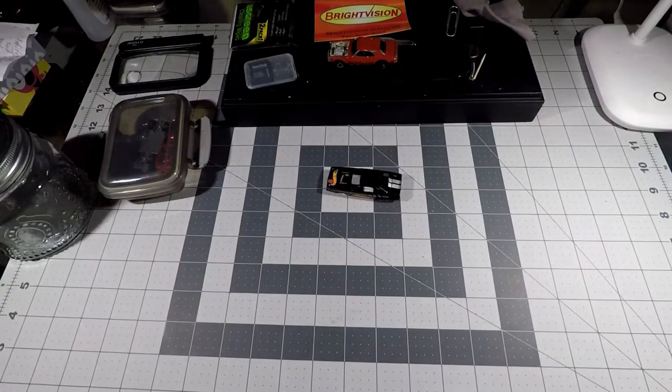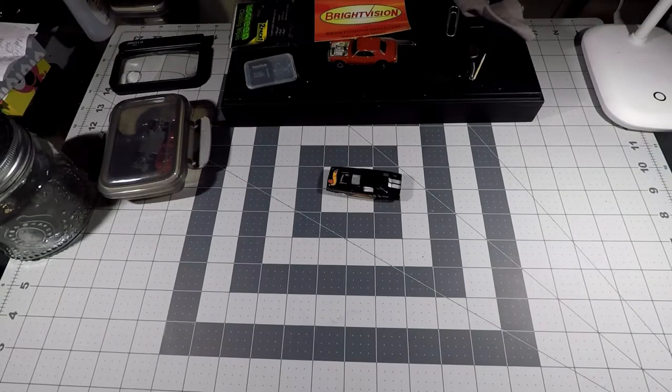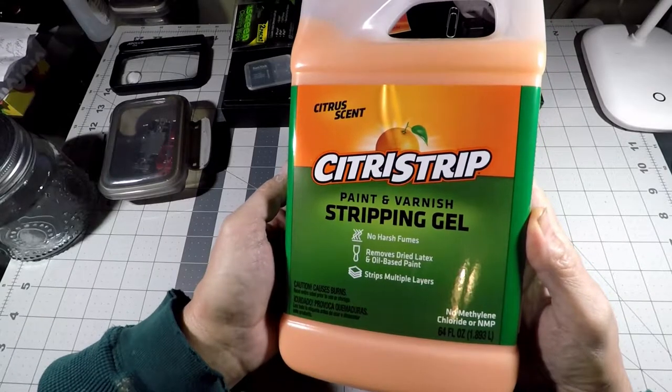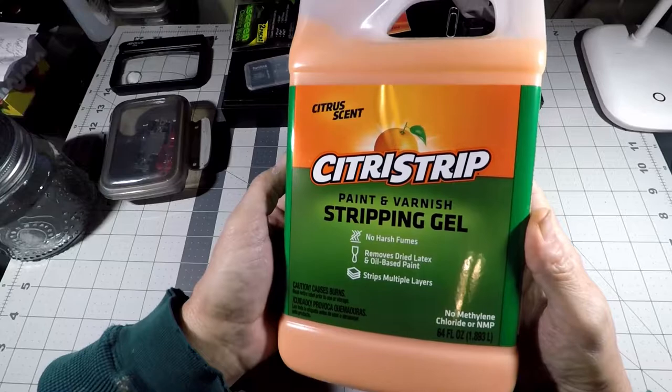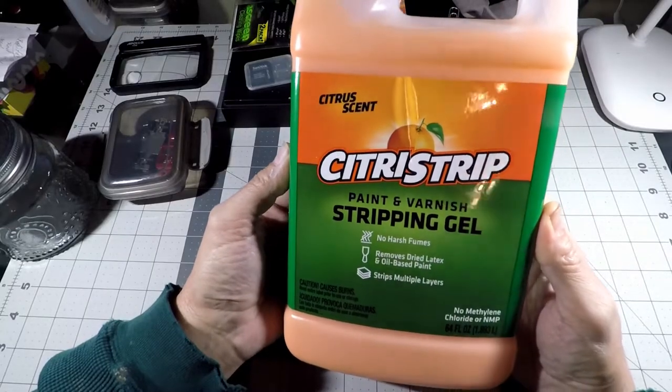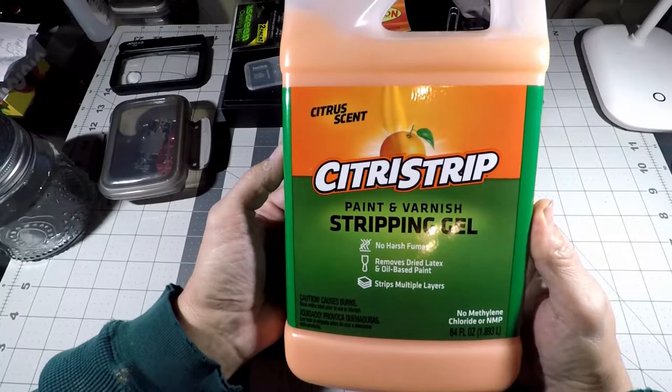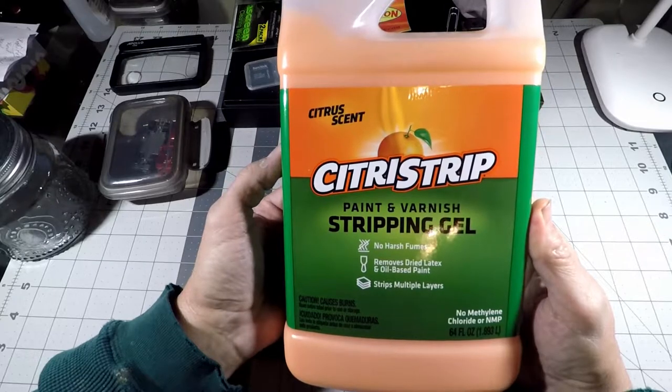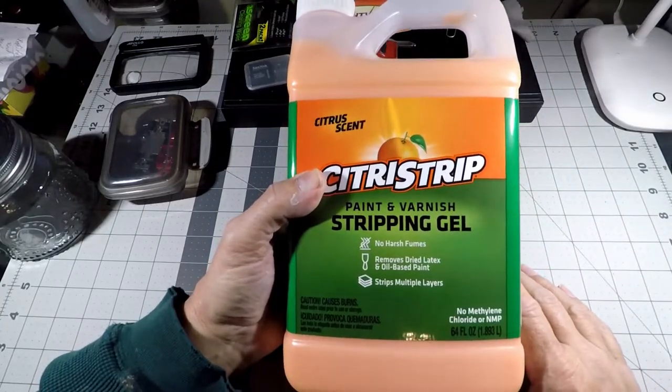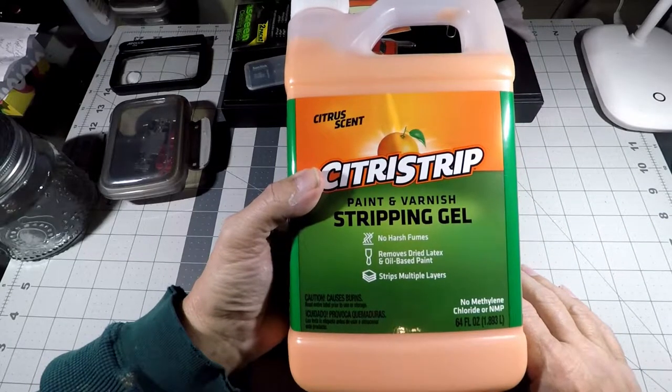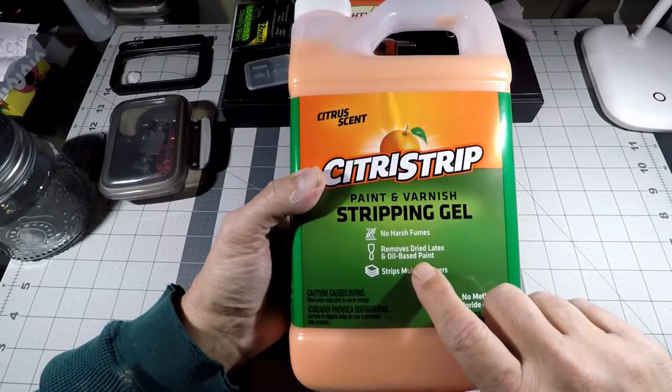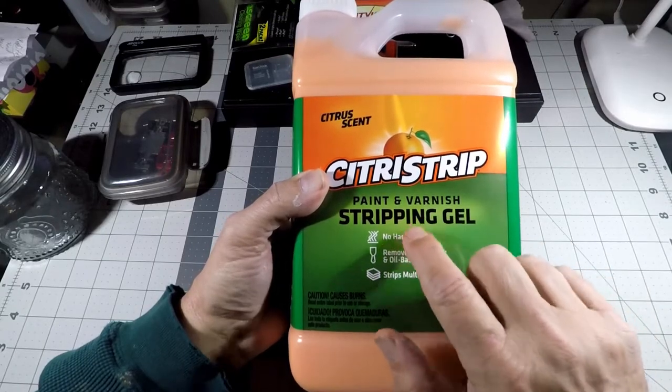I am going to be using, and this is one of the most popular methods on YouTube, Citrus Strip. You can pick this up. This is 64 ounces or 1.893 liters. This is 64 ounces of stripper. Like I said, you can use any paint stripper out there. Doesn't matter. Some are more hazardous, of course, to the environment. Some are more hazardous to you. And you know, anytime you want to deal with chemicals, you want to wear gloves and all that good stuff. You want to be as careful as you can. And as you can see, it strips multiple layers, removes dried latex and oil-based paint, and no harsh fumes.